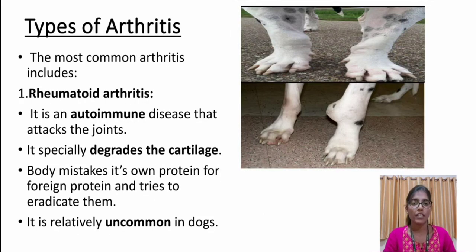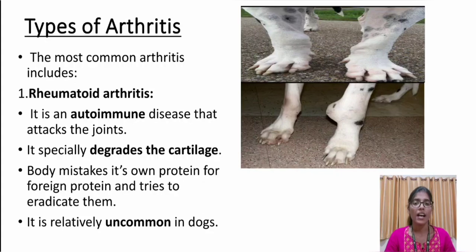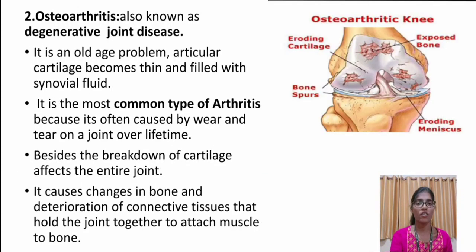There are mainly three common types of arthritis: rheumatoid arthritis, osteoarthritis, and septic arthritis. Rheumatoid arthritis is an autoimmune disease that attacks the joints and specially degrades the cartilage. As the term autoimmune indicates, the body mistakes its own protein for foreign protein and tries to eradicate them. It is relatively uncommon in dogs.